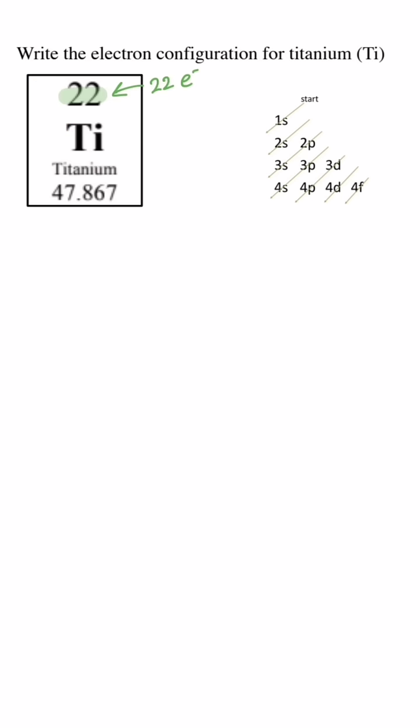Titanium has 22 electrons. The first sublevel is the 1S. An S sublevel can hold a maximum of 2 electrons, so I'll write the superscript 2. Next is the 2S, also an S sublevel, so there'll be 2 electrons in there.